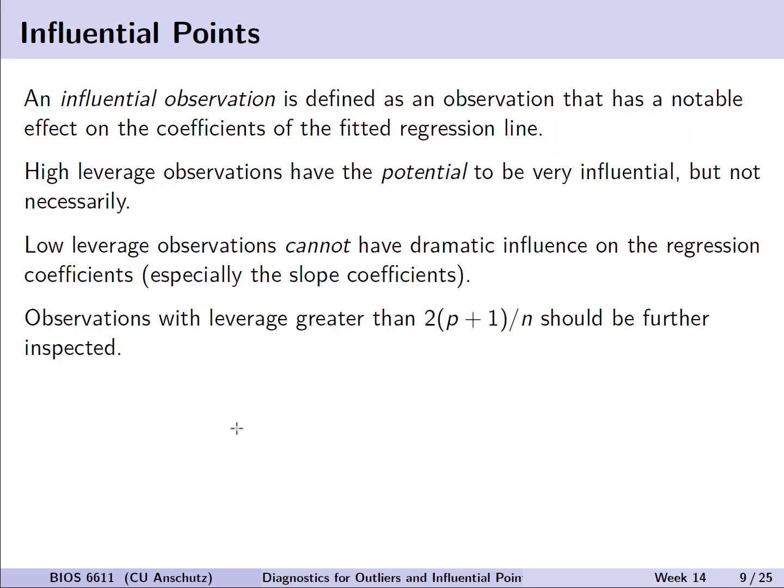An influential point, on the other hand, is defined as an observation that has a notable effect on the coefficients of our fitted regression line. High leverage observations have the potential to be very influential, but don't necessarily have to be so. Whereas low leverage observations cannot by their nature have a dramatic influence on the regression coefficients, especially those relating to the slopes. Observations with a leverage greater than 2 times p plus 1 over n should further be inspected and investigated for both leverage and influential points.